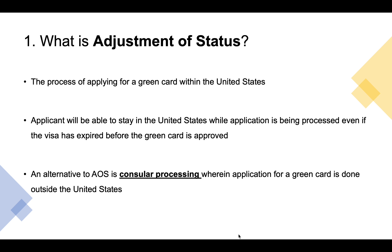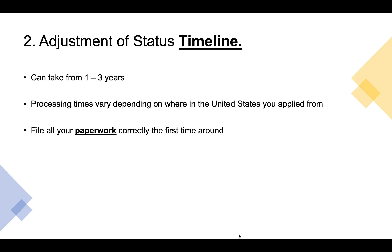This guide will cover the rules in AOS for getting a green card through adjustment of status. Adjusting your status can take anywhere from one to three years, depending on your situation. The best way to ensure the shortest time possible is filing your work properly the first time. Getting a green card through AOS can be a slow process, and the exact timeline will depend on your situation and where in the United States you apply from, so make sure to check your nearest USCIS office's processing times.